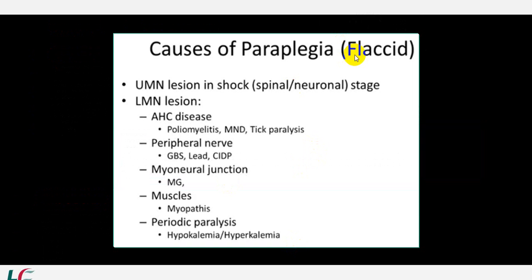Chronic paraplegia is always spastic. Common chronic conditions: cord compression, motor neuron disease, subacute combined degeneration, lathyrism. In flaccid paraplegia: during acute upper motor neuron lesion with spinal shock, recovery stage becomes spastic. Lower motor neuron diseases such as poliomyelitis, motor neuron disease, and tick paralysis are flaccid. Peripheral nerve damage like Guillain-Barré, lead neuropathy, and chronic inflammatory demyelinating polyneuropathy are also lower motor neuron variety.